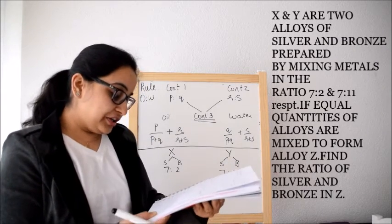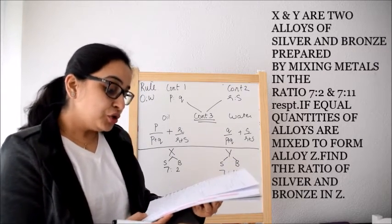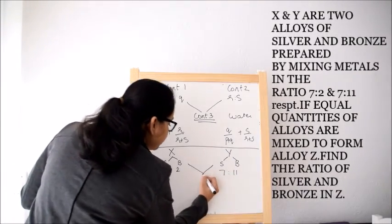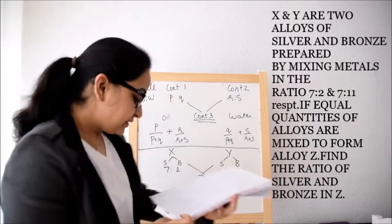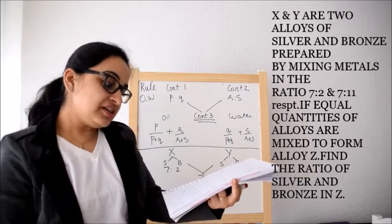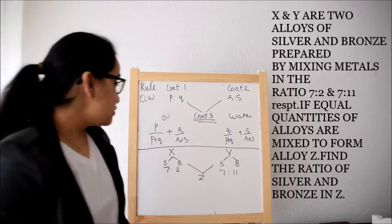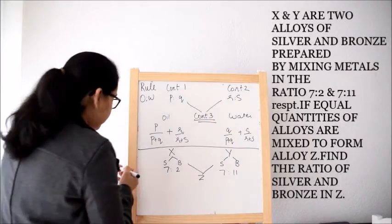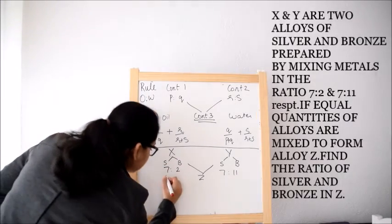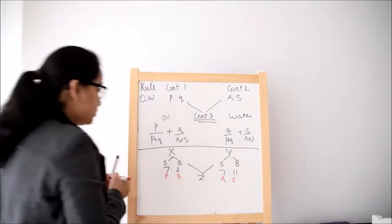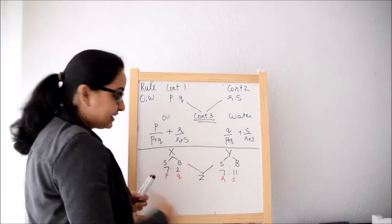Now if equal quantities of alloy are mixed to form alloy Z, now these are mixed to form alloy Z then the ratio of silver and bronze in Z will be. So how we will find this? Now according to this formula, 7 is P, this is Q, this is R and this is S. So we apply this formula directly.